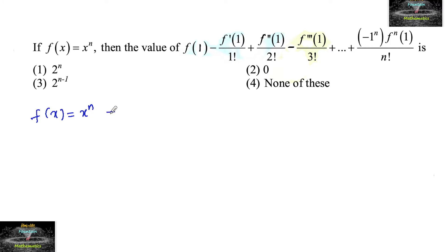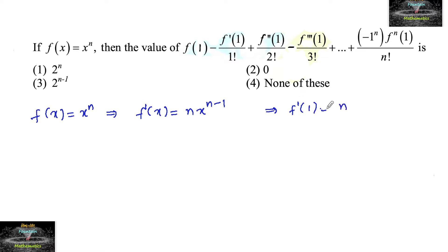Since f(x) = xⁿ, the first derivative is f'(x) = n·xⁿ⁻¹. At x = 1, f'(1) = n·1ⁿ⁻¹ = n.